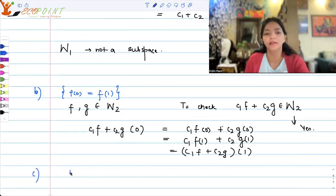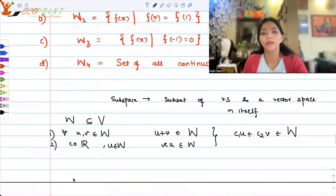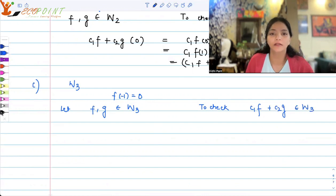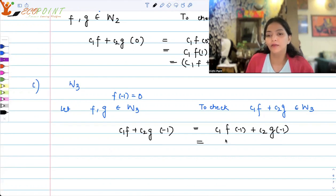Let's look at option c, W₃. W₃ is f(-1) equals 0. Let f and g again belong to W₃. We have to check if c₁ times f plus c₂ times g belongs to W₃ or not. What I'm going to do is consider c₁f plus c₂g at (-1) and that is going to be 0 plus 0 because f(-1) is 0 and g(-1) is 0. So hence, this is also equal to 0.